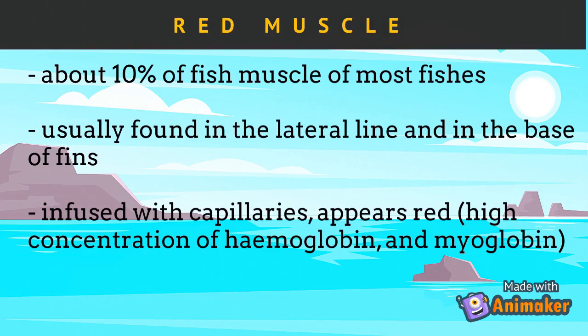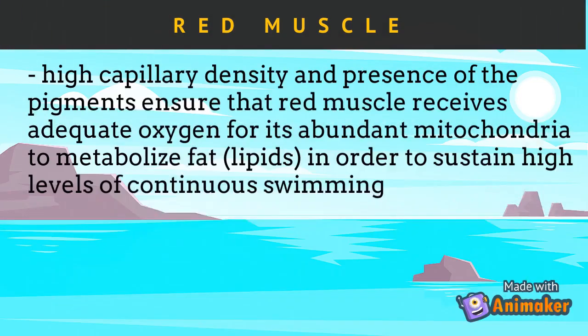The red muscle is about 10% of fish muscle in most fishes, depending on the species. Some migratory fish such as tuna and mackerels can have up to 48% red muscle. It is usually found in the lateral line and in the base of fins. Red muscles are infused with capillaries and appear red because of the high concentration of red oxygen-binding pigments — hemoglobin in the blood and myoglobin in the muscle tissue itself. This high capillary density and presence of pigments ensures that red muscle receives adequate oxygen for its abundant mitochondria to metabolize fat or lipids, sustaining high levels of continuous swimming.